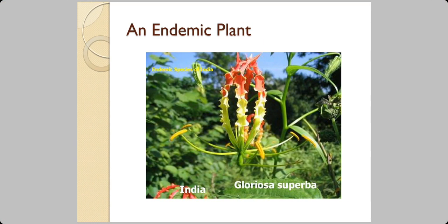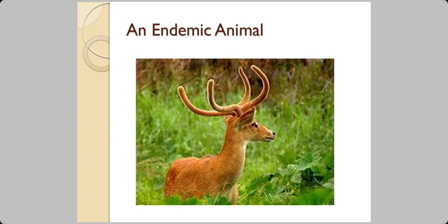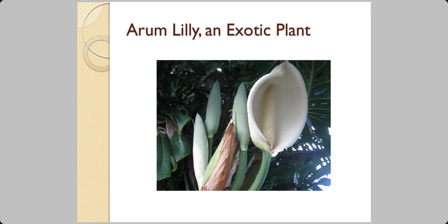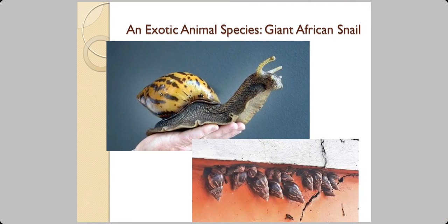This is an example of an endemic plant and this is an endemic animal — it is not found anywhere else in the world, only in India. This is Brow Antelidae, found only in Meghalaya. On the other hand, this is an example of an exotic plant. Adam lily is exotic to India, originally from Southeast Asia. This is a giant African snail — an exotic animal species. Look at the snail's size on a person's palm. It has become a pest in India in moist climates — in the Malabar area and the Western Ghats — and the problem is it has no natural predator.